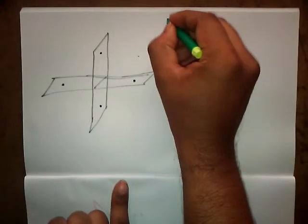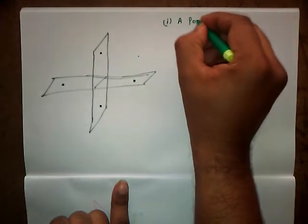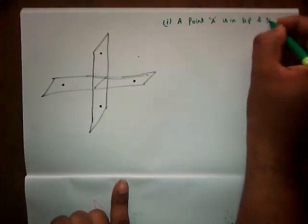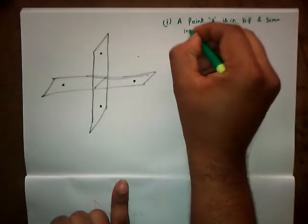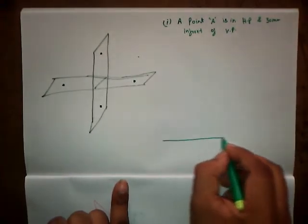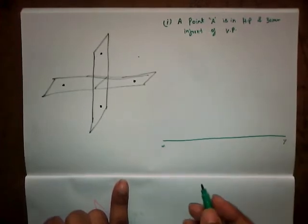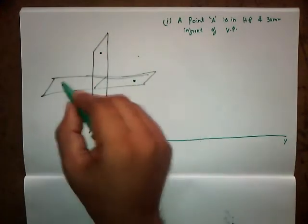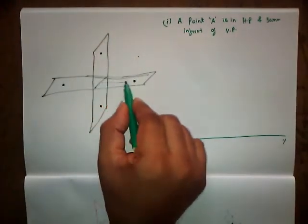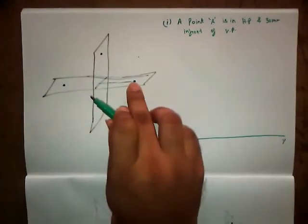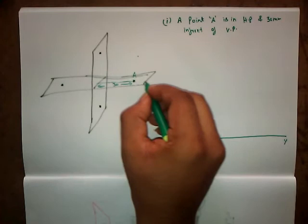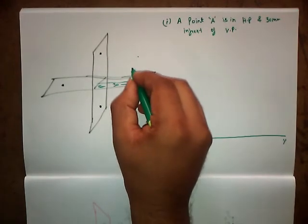Let us consider a combination: point A is in HP and 30 mm in front of VP. So this is the combination we have. Let us draw an XY reference line. As stated, the point is in HP — either here or here — and the second condition is in front of VP. So this is going to be our required position. The distance given in front is 30 mm and the name of the point is capital A.